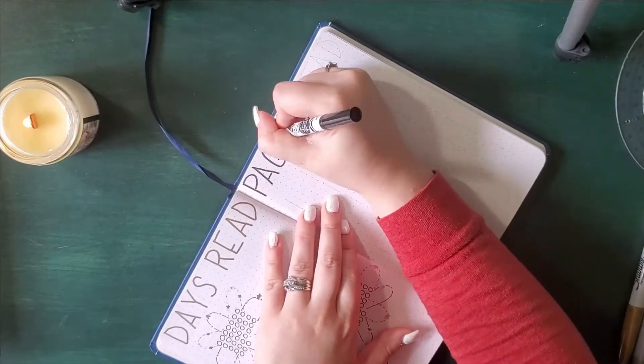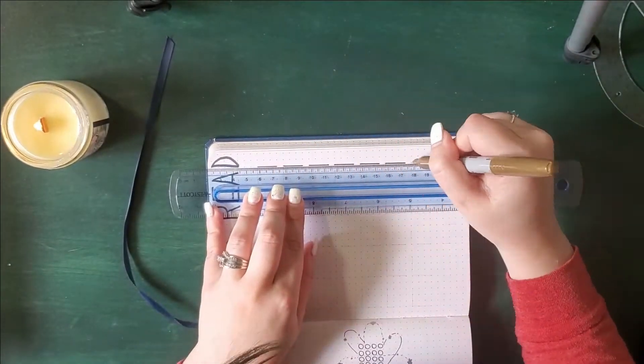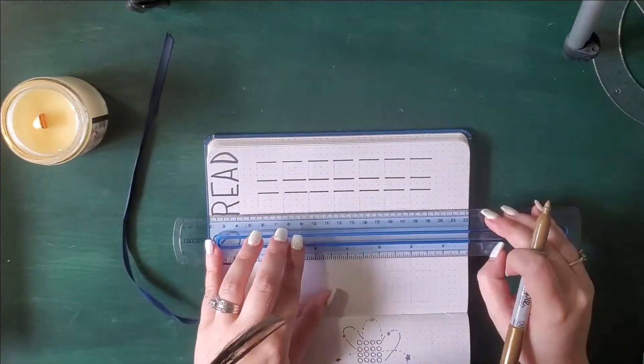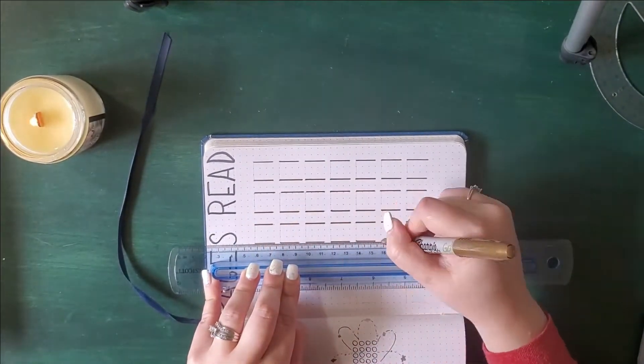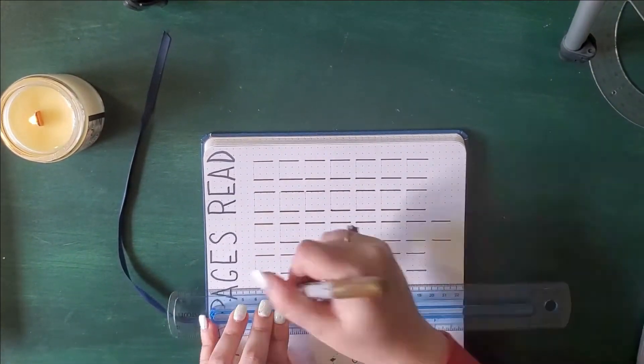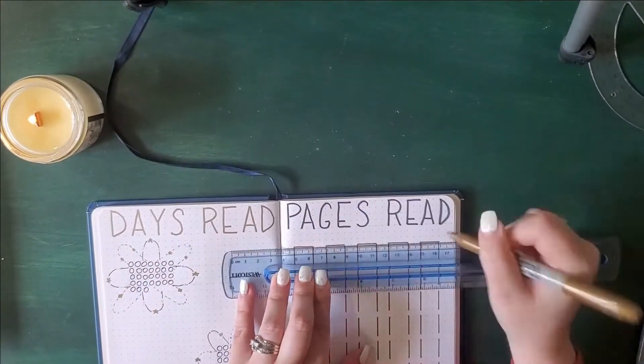And for pages read I did my normal squares. I somehow ended up adding a whole lot more squares than I needed, but it kind of worked out to be an artistic feature in the end.